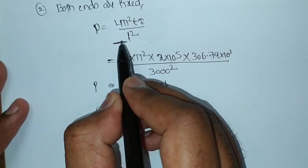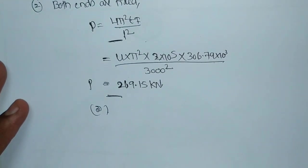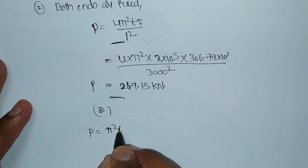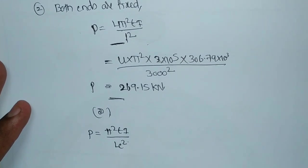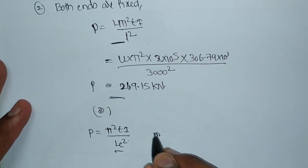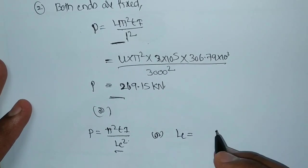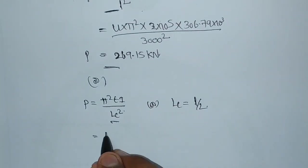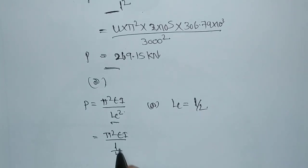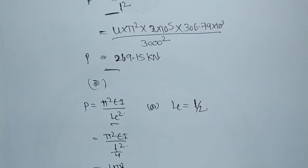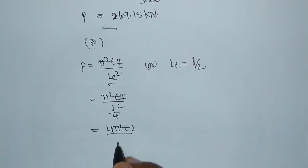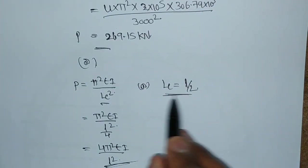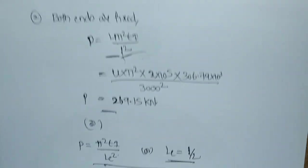This crippling load can also be found with respect to effective length. With respect to effective length, the crippling load formula is Pi squared EI by LE squared. For both ends fixed, the value of LE can be written as L by 2. Substituting L by 2 in LE, LE squared becomes L squared by 4. So this can be written as 4 Pi squared EI by L squared - the same formula comes up. If they ask with respect to effective length, we can find it this way; otherwise we can substitute directly.